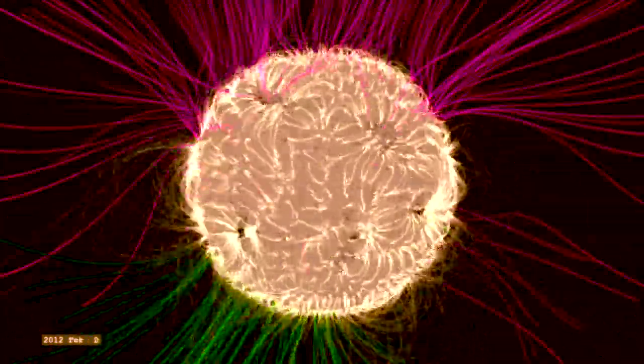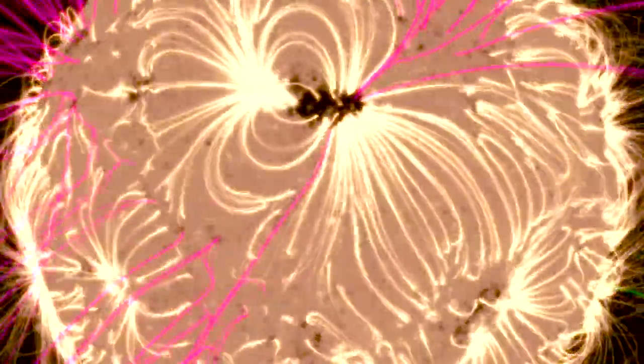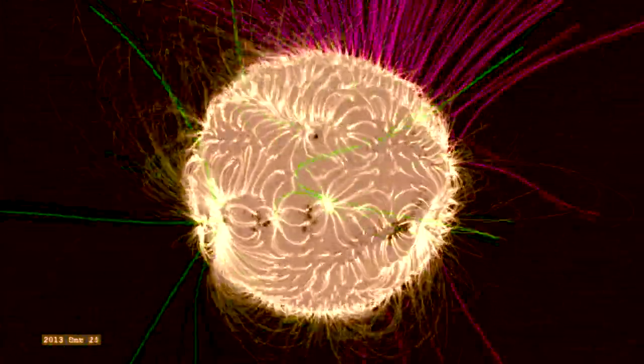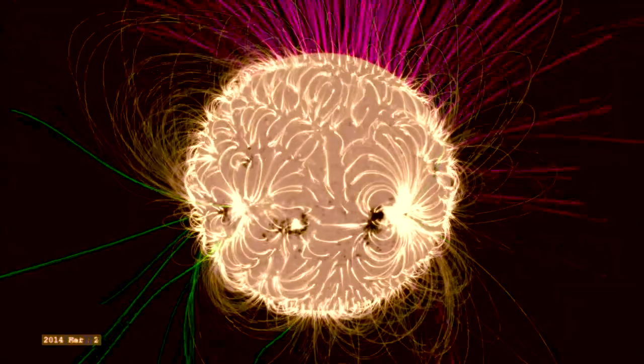What we're looking at here is one such model and the color coding represents what we call open magnetic field lines, which means that they extend from within the sun all the way out to really, really far out in space.